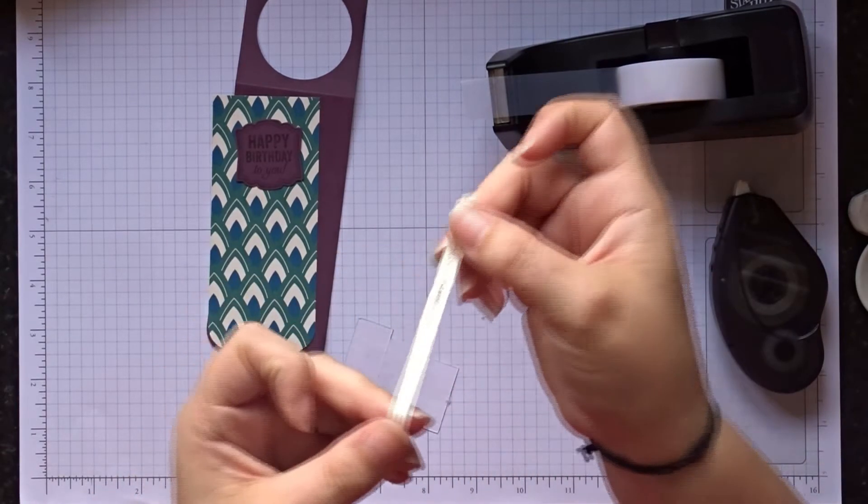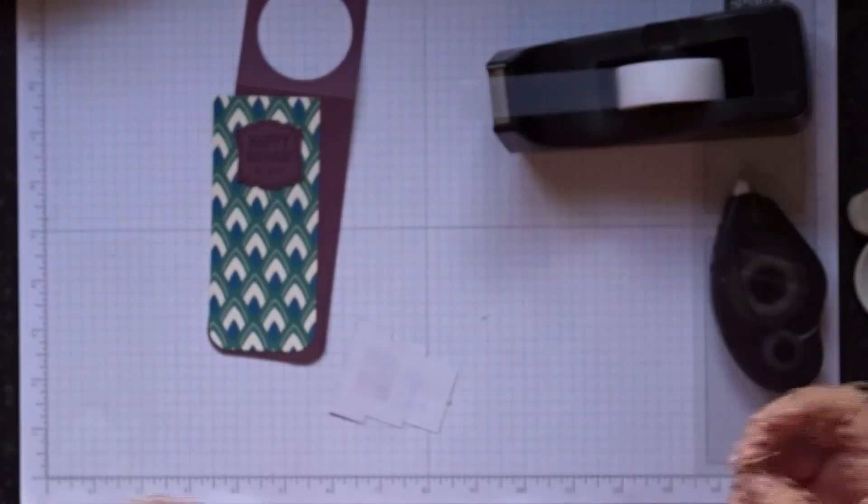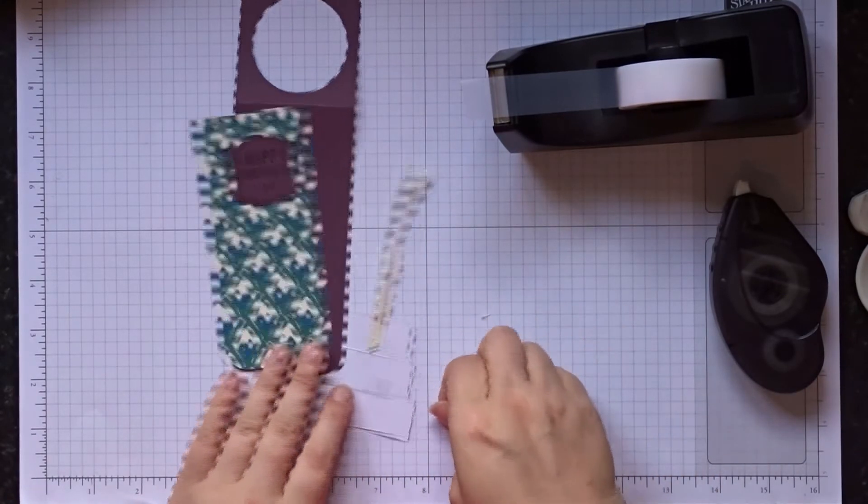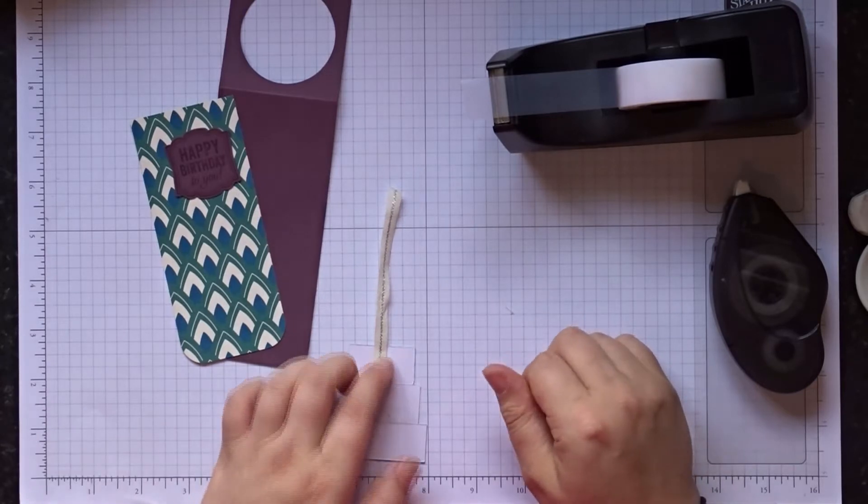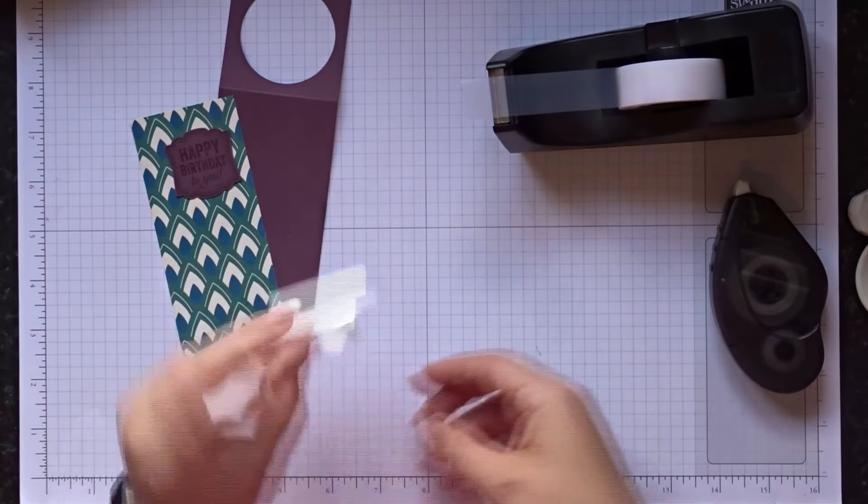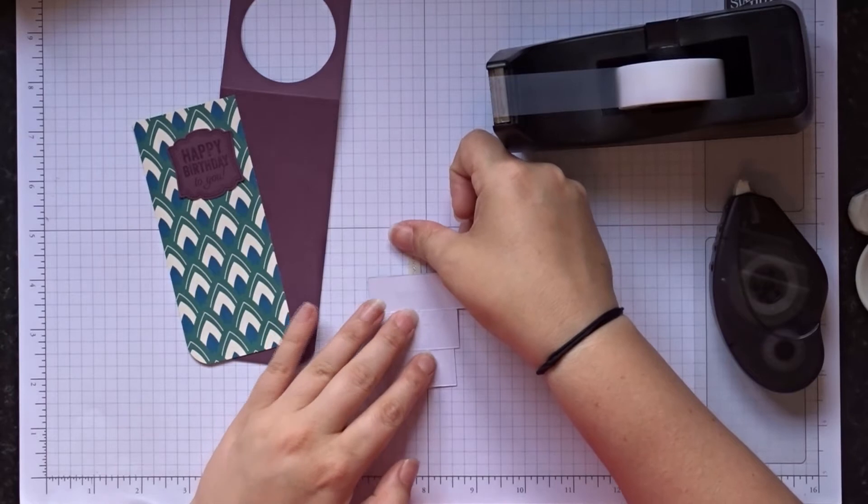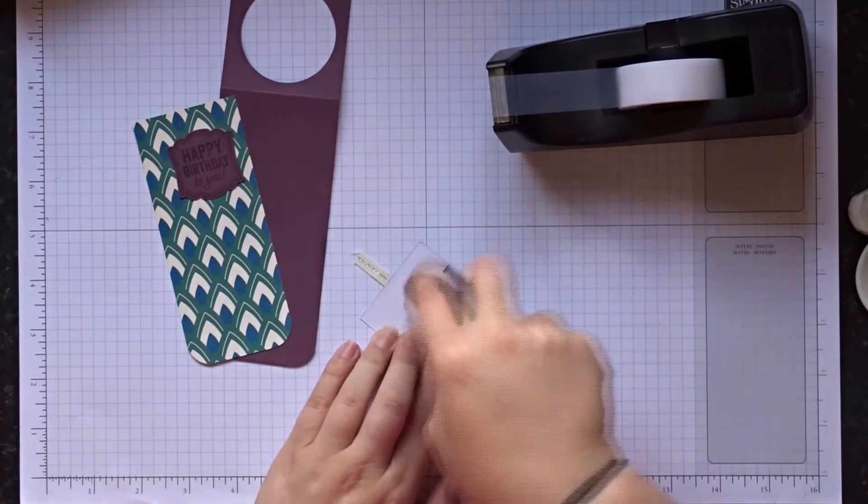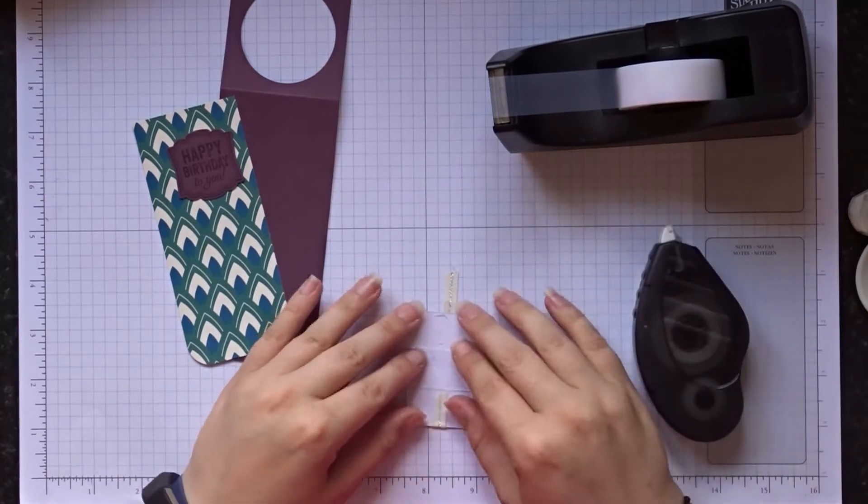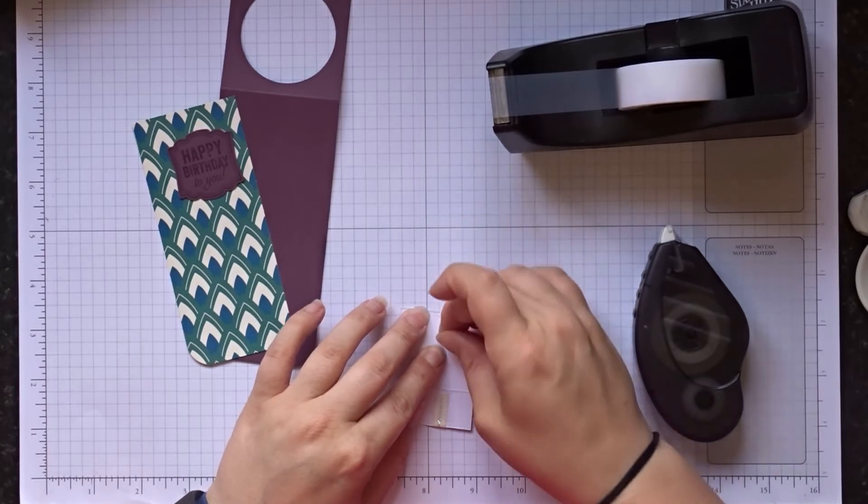And this is the quarter inch natural ribbon with the silver running through if you can see that. So just line it up where you'd like it again, hopefully in the middle, and then we're just going to fold it over and stick it on the other side. So I will put a bit of tape on that top just to secure it. Okay, and then you're just going to pull it tight, a bit of fast fuse at the other end.